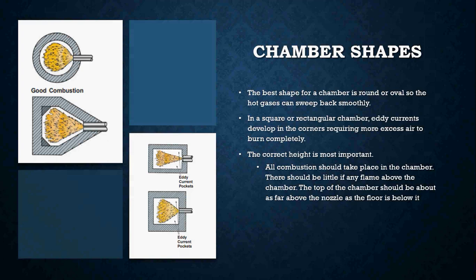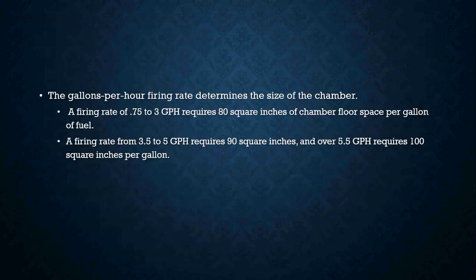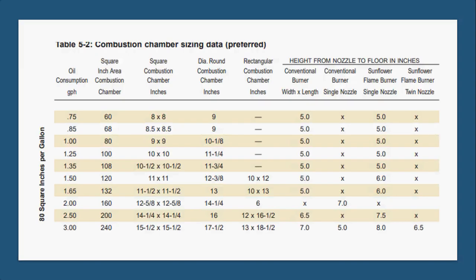The top of the chamber should be about as far above the nozzle as the floor is below it. The gallons per hour firing rate determines the size of the chamber. A firing rate of 0.75 to 3 gallons per hour requires about 80 square inches of chamber floor space per gallon of fuel. Firing rates of 3.5 to 5 gallons per hour require about 90 square inches, and anything over 5.5 gallons per hour requires 100 square inches per gallon.